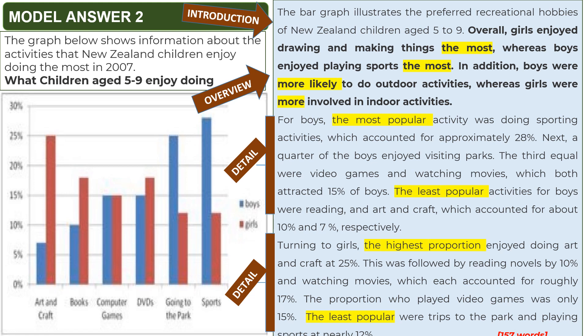Turning to the girls, the highest proportion enjoy arts and crafts at 25%. This is followed by watching movies at 17% and reading at 10%. The proportion who played video games was only 15%. And the least popular activities are going to the park and playing sports at nearly 12% each. So you write the highest, the second highest, the third, and the lowest — then do the same for another keyword or main feature.